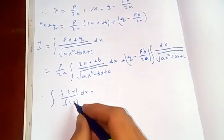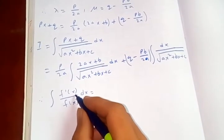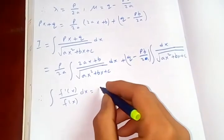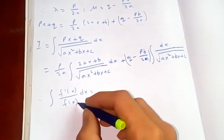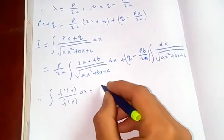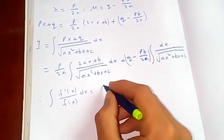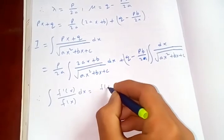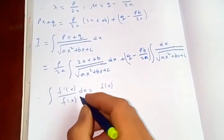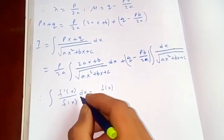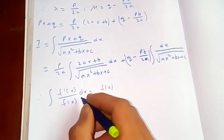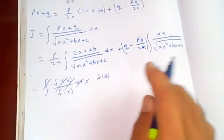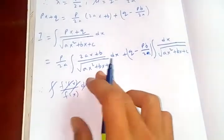If you have a function and the numerator is the differentiation of this denominator one, then you get... No, no, this one is wrong.